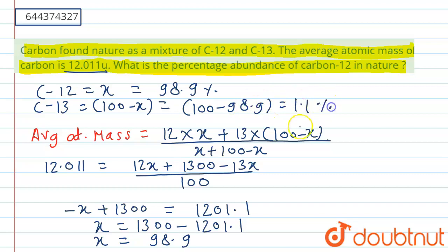Around 1.1 percent abundance. So for carbon-12, it is asking for carbon-12, so for carbon-12 we have 98.9 percent abundance. As you can see here, by this method we can solve and get the answer.